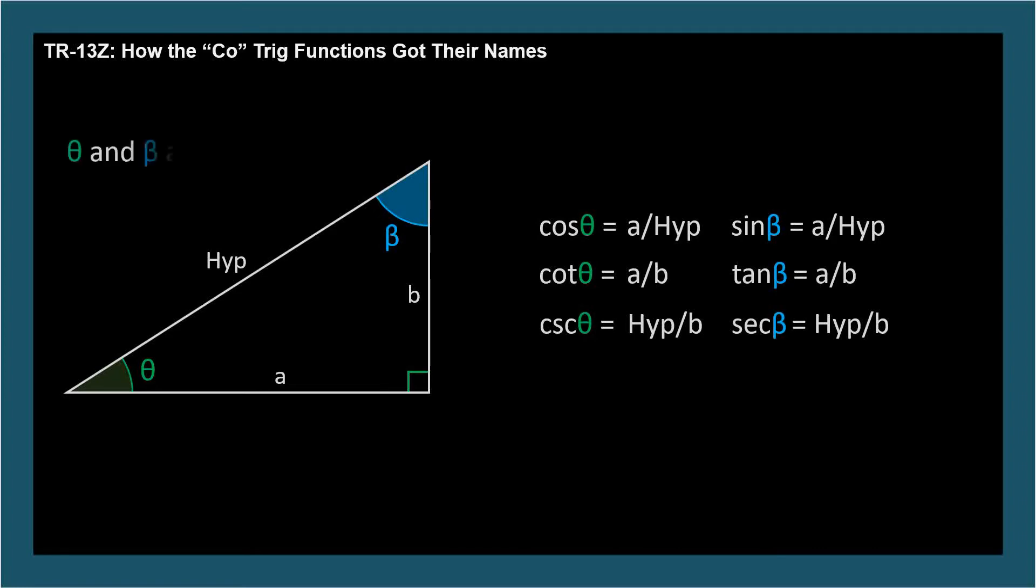Let's note explicitly that theta and beta are complements, like all pairs of acute angles in a right triangle, since they add up to pi over 2 radians or 90 degrees. Theta is the complement of beta, and beta is the complement of theta.